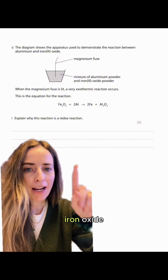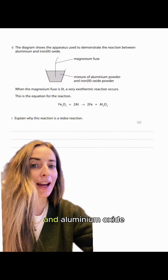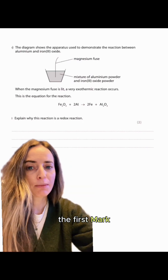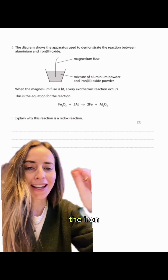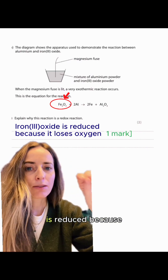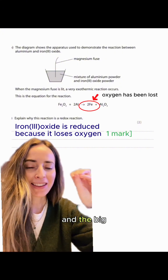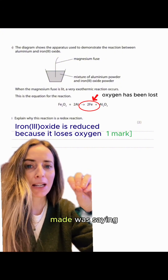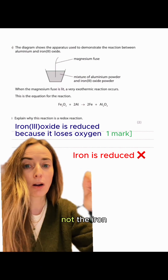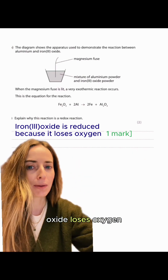We've got iron oxide reacting with aluminium to give iron and aluminium oxide. The first mark is going to be for stating that the iron oxide is reduced because it loses oxygen. The big mistake here was that students said the iron loses oxygen — it's not the iron, it's the iron oxide that loses oxygen.